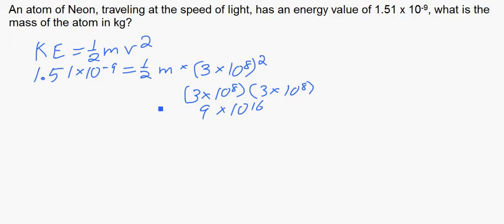And we can bring this down, so it's still one-half times the mass. And it's still equal to 1.51 times 10 to the negative 9th. Okay. Now, to simplify even more, we can divide each side by the 9 times 10 to the 16th power.